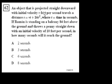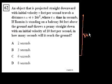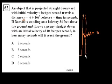Problem 62. An object projected straight downward with initial velocity v feet per second travels a distance s equals v times t plus 16t squared, where t equals time in seconds. Ramon is standing on a balcony 84 feet above the ground and throws a penny straight down with an initial velocity of 10 feet per second. In how many seconds will it reach the ground? So he's 84 feet above the ground. We want to know how many seconds it takes the penny to travel s equals 84 feet.